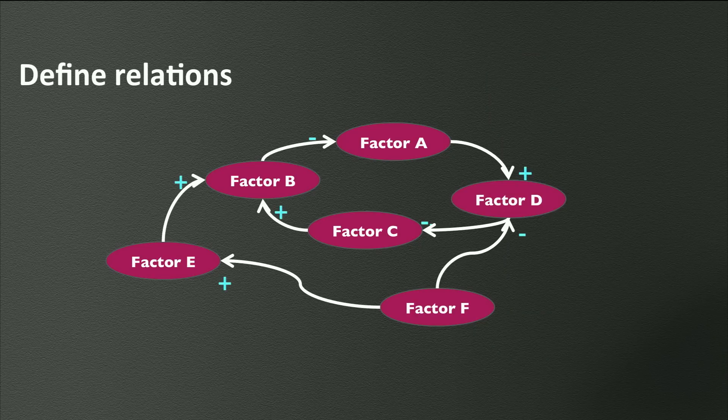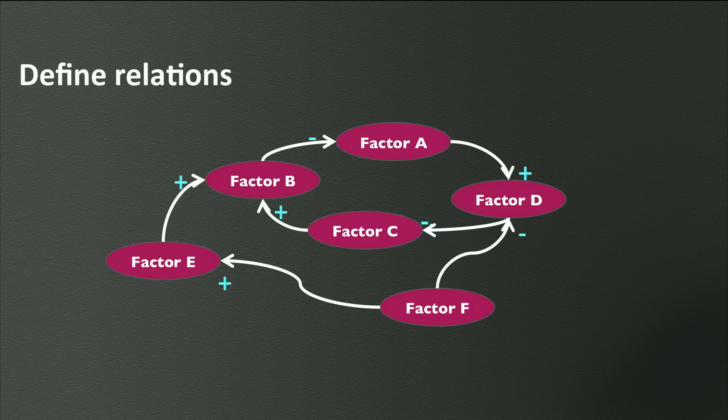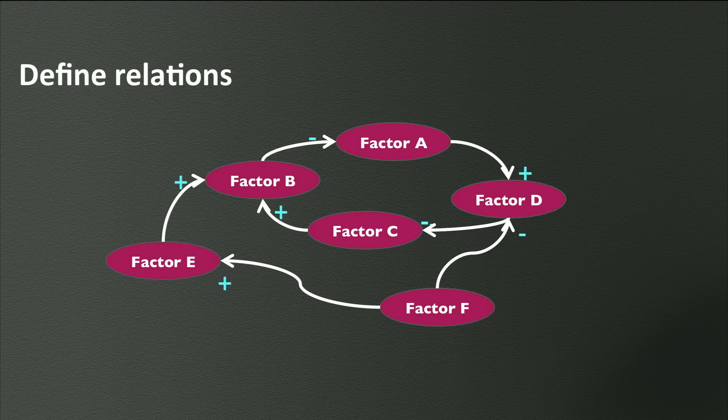Label each arrow by adding a plus or a minus sign to define the relation between factors. The diagram reads like this. If factor E increases in value, then factor B also increases in value.